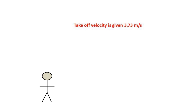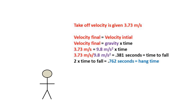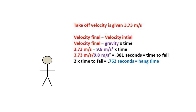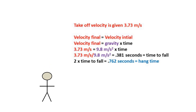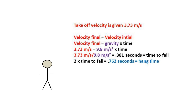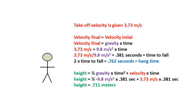Now let's solve the problem as if we only have the takeoff velocity. Again, velocity initial equals velocity final, so we solve for the time to hit the ground from the peak. Using velocity equals gravity times time — with no initial velocity at the peak — and plugging in our numbers, we get a fall time of 0.381 seconds. Multiplying by 2 gives a total hang time of 0.762 seconds.